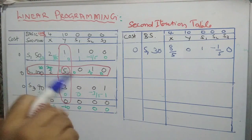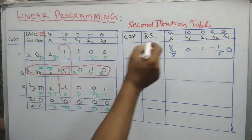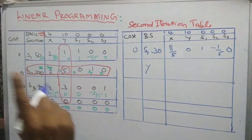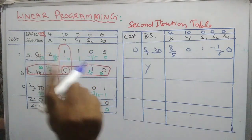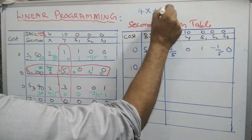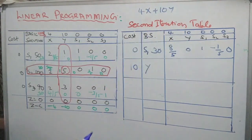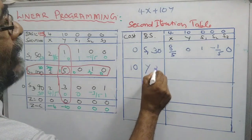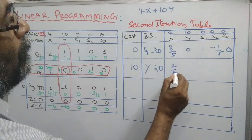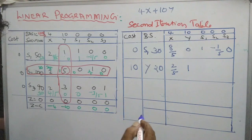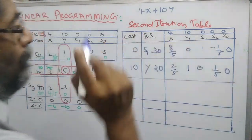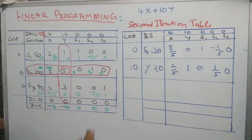What is the cost of y? From our objective function 4x plus 10y, the cost of y is 10. From the new table, y equals 20, and the corresponding elements are 2 by 5, 1, 0, 1 by 5, 0. That is the modification.